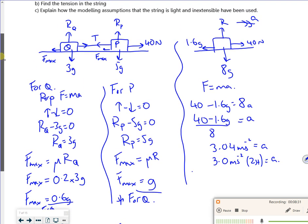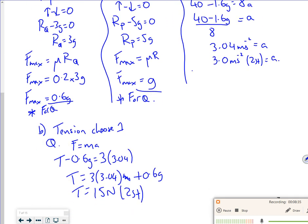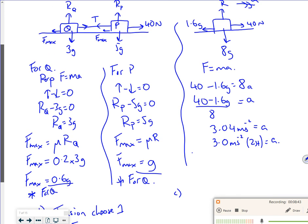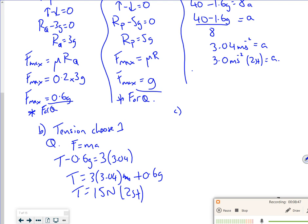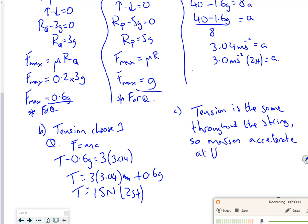So explain how the modeling assumptions that the string is light and inextensible have been used. Right. So if the string is light and inextensible, they both move at the same time, at the same speed, at the same acceleration. So, the pack says, that tension is the same throughout the string. So the masses accelerate at the same rate. Also the mass of the string is negligible. Which is a massive assumption.